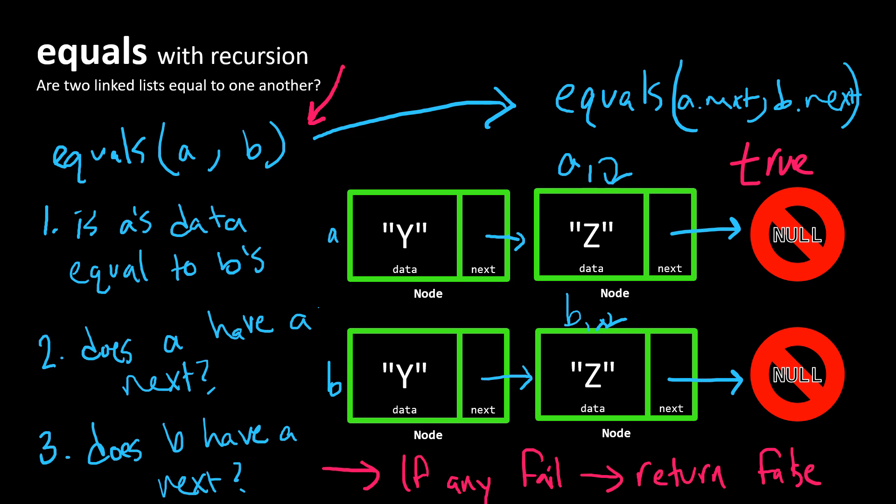Yes, they are. And if so, we're going to recur on the rest of the list. We're going to keep calling ourself recursively, checking node by node,